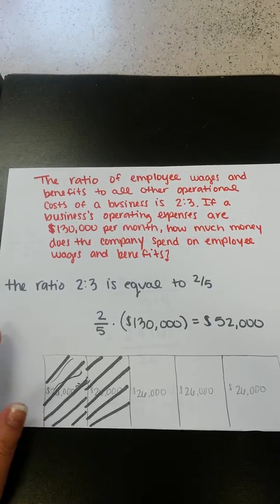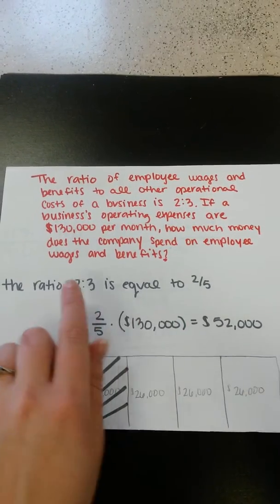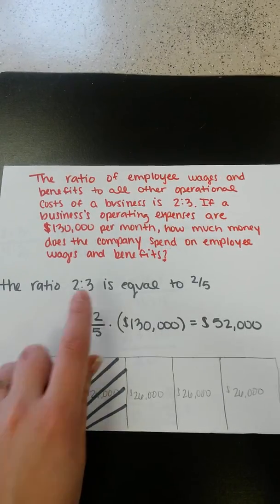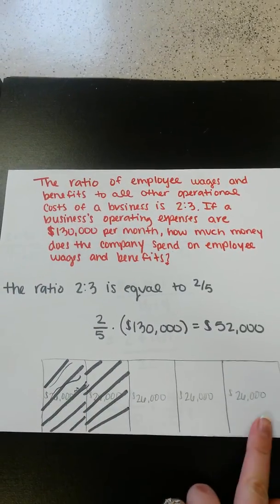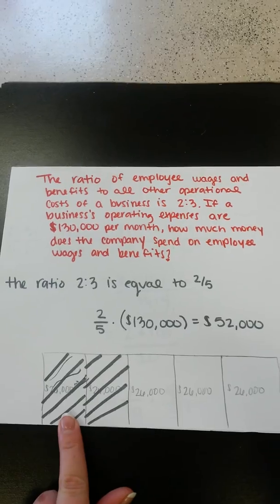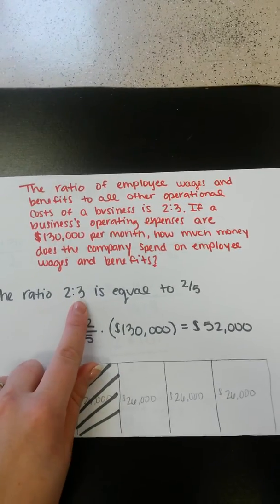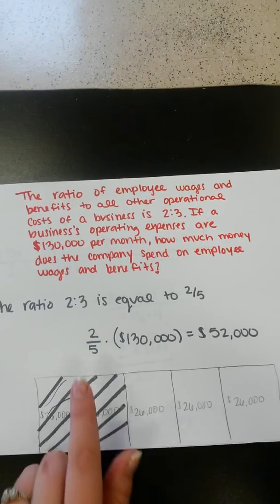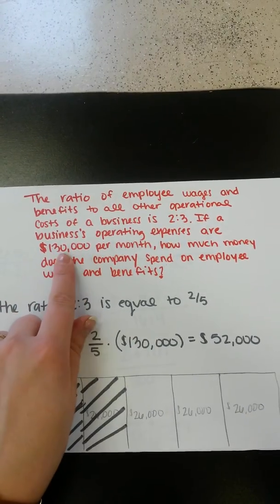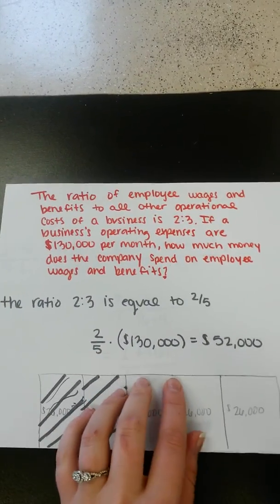So the ratio of 2 to 3 is equal to 2 fifths because 2 to 3 means that as a whole there's 5. So there's 5 sections and it means that 2 of those. And the other 3 is obviously this 3. So if we want to find out 2 fifths of $130,000, you can multiply it like this.